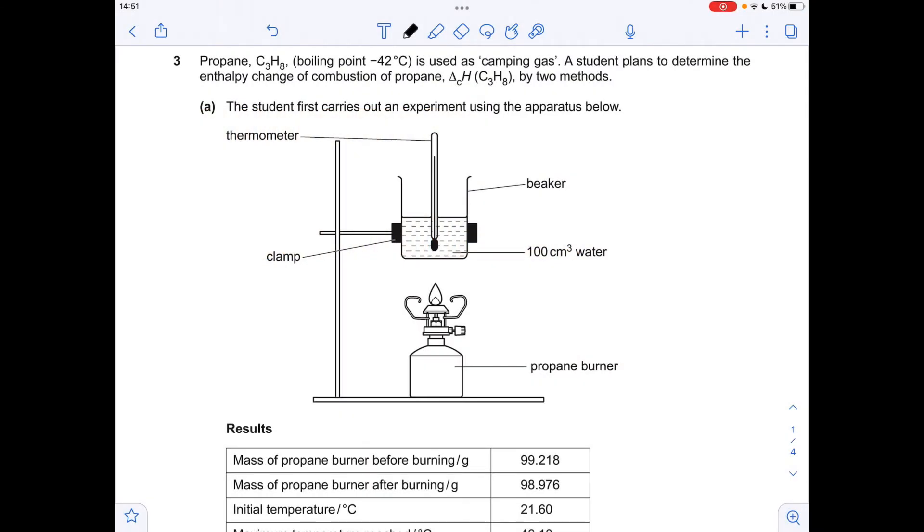Okay, so to make a start, obviously it's a calorimetry question. We're going to calculate the amount of energy that's been put into the water from the burning of the propane from the burner, and then we're just going to scale it up to kilojoules per mole to get enthalpy change of combustion.